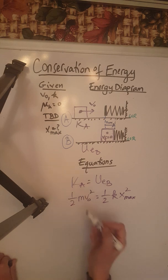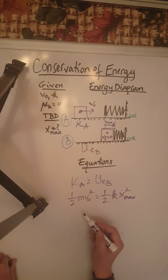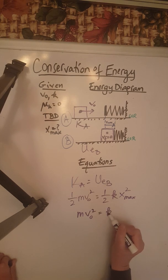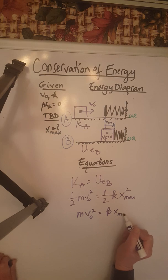Now we can multiply both sides by two, so the one-half goes away, which leaves us with m v-naught squared equals k x max squared.